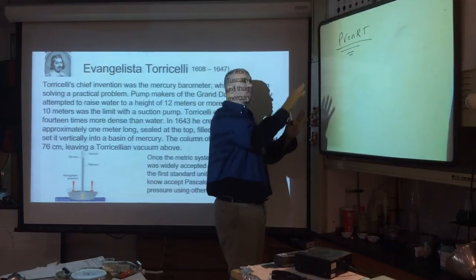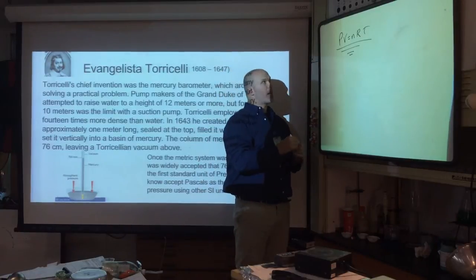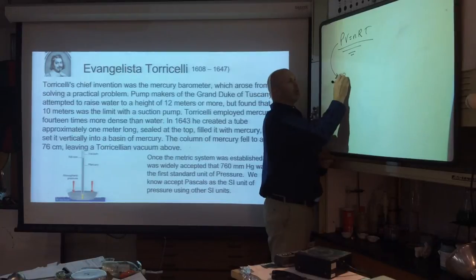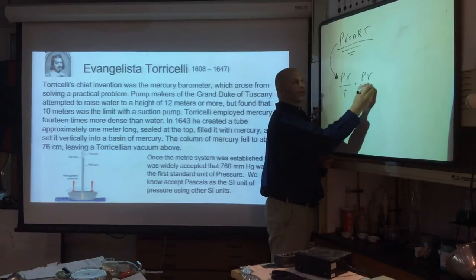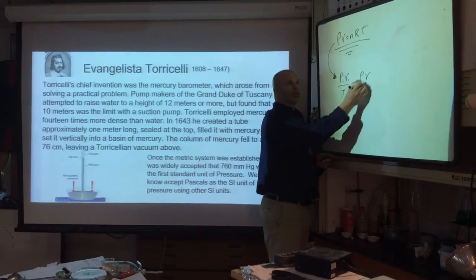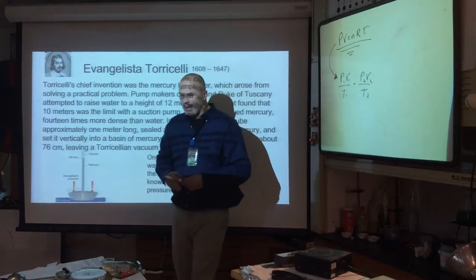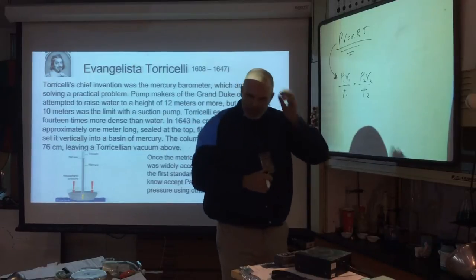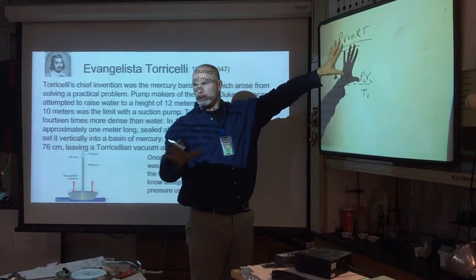We'll talk later about why they call it the ideal formula. For now, I call it the static formula. We converted that into PV over T equals P₂V₂ over T₂, which we use mostly at the Regents level — this is the current condition, this is a new condition, with moles held constant. Tomorrow we're going to have a quiz on the derivation of this, which I have posted.